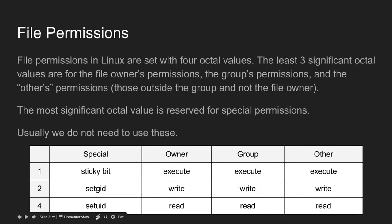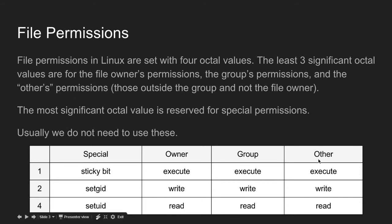File permissions in Linux are set with four octal values. The least three significant octal values are for the file owner's permissions, the group's permissions, and the others' permissions — those outside the group and not the file owner. The most significant octal value is reserved for special permissions, and usually we don't use these.